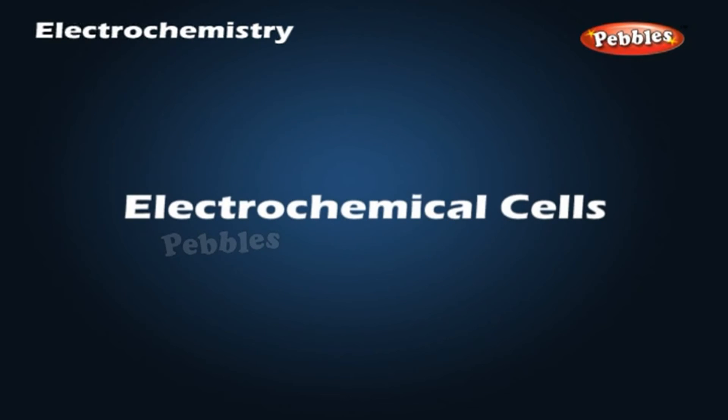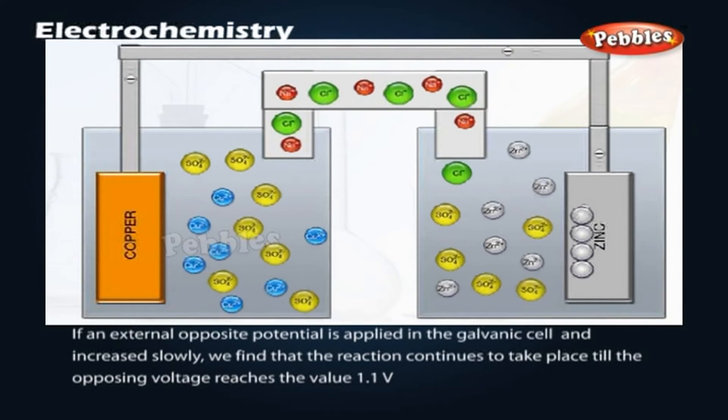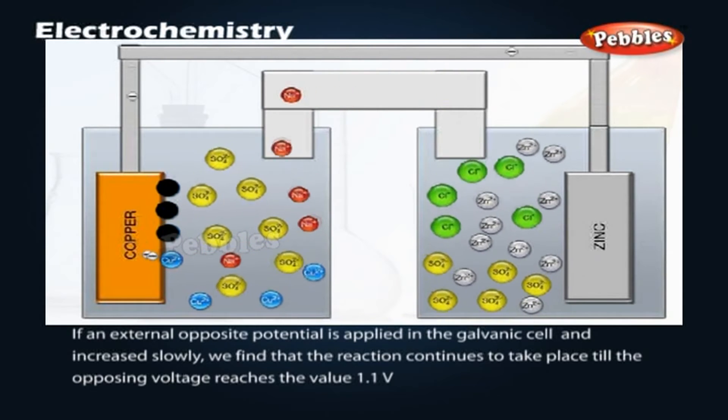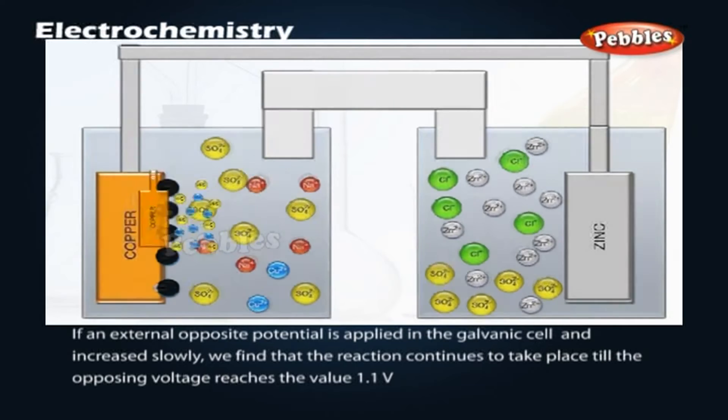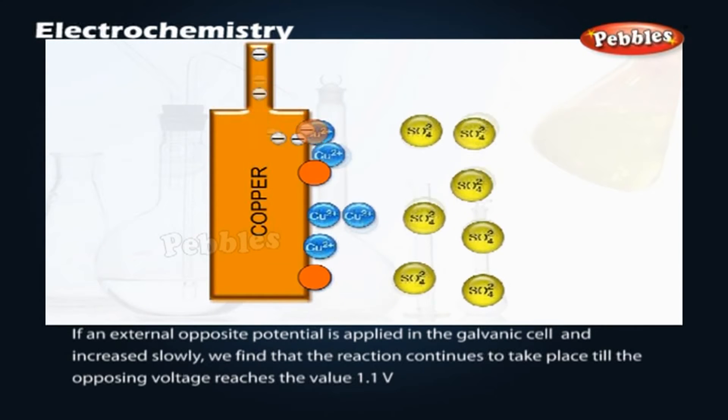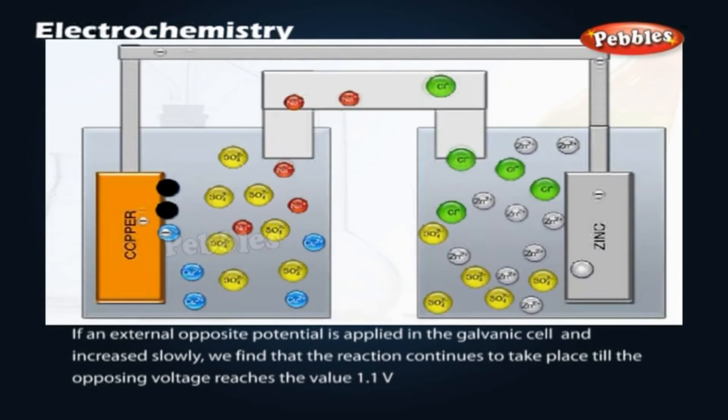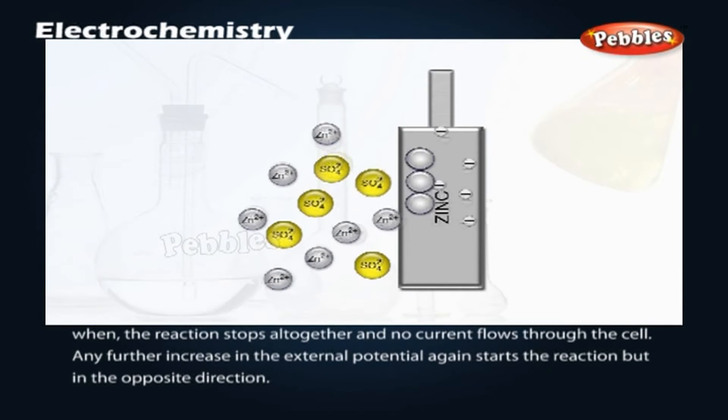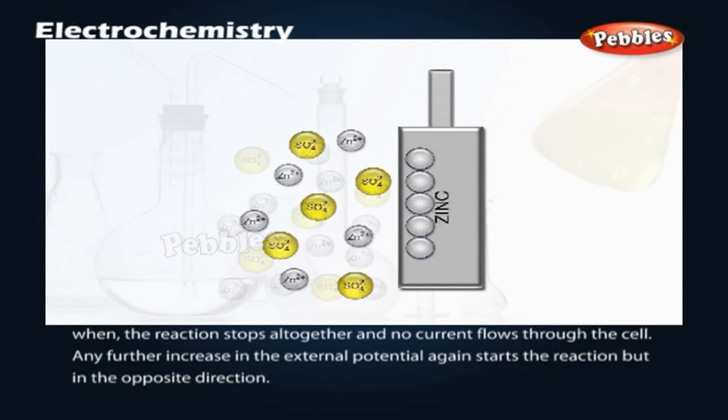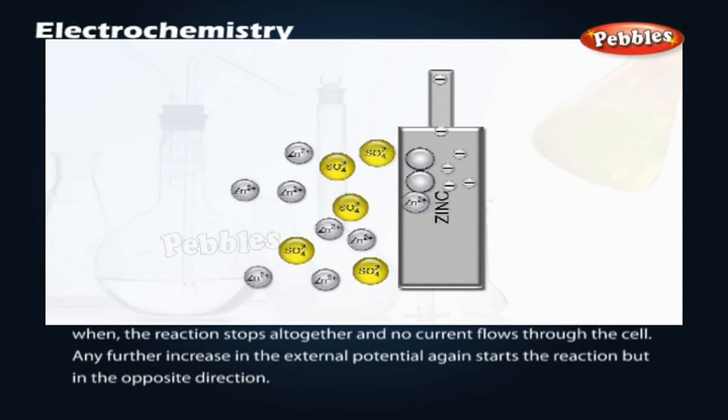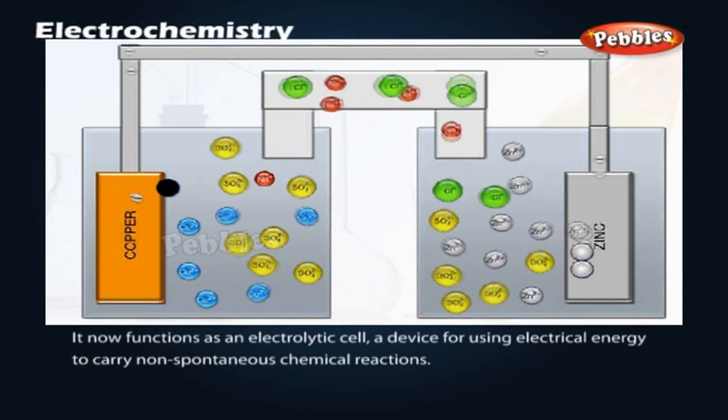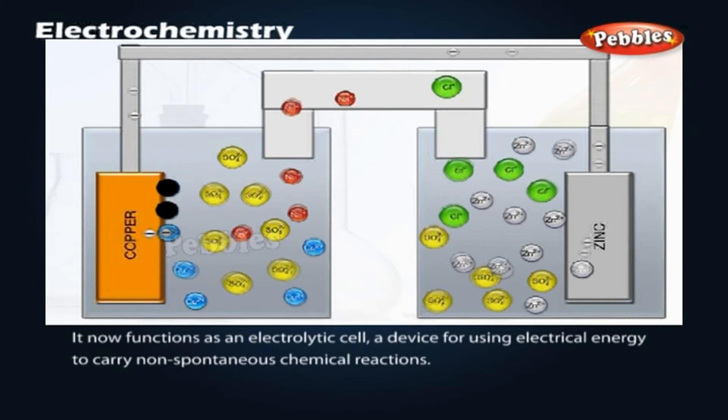Electrochemical cells. If an external opposite potential is applied in the galvanic cell and increased slowly, we find that the reaction continues to take place till the opposing voltage reaches the value 1.1 volt when the reaction stops altogether and no current flows through the cell. Any further increase in the external potential again starts the reaction, but in the opposite direction. It now functions as an electrolytic cell, a device for using electrical energy to carry non-spontaneous chemical reactions.